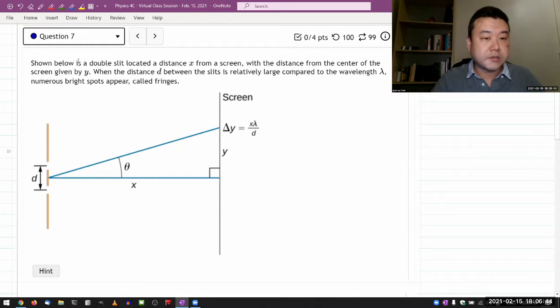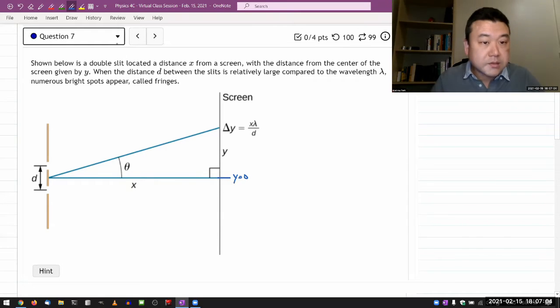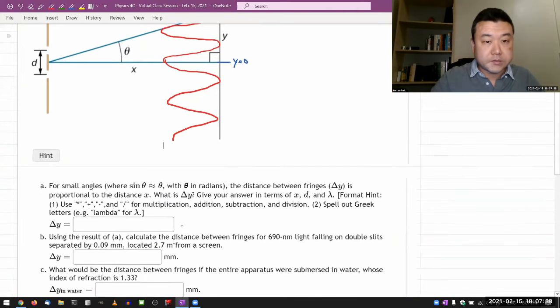So it says shown below is a double slit located a distance x from a screen with a distance from the center of the screen given by y. Okay, so the question is setting up a kind of a coordinate system with y equals zero here. When the distance d between the slits is relatively large compared to the wavelength lambda, numerous bright parts appear called fringes. Yeah, it's describing the double slit interference pattern that you have seen in your textbook and elsewhere. I'm just describing it in words without telling you what the shape looks like.